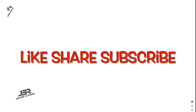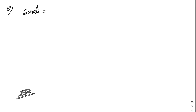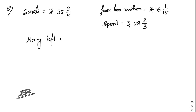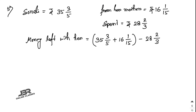Sum number 5: Sonali had rupees 35 and 3/5. She received rupees 16 and 1/15 from her mother. She spent rupees 28 and 2/3 on food. How much money is left? First add what she had and what she received from her mother, then subtract the amount spent.